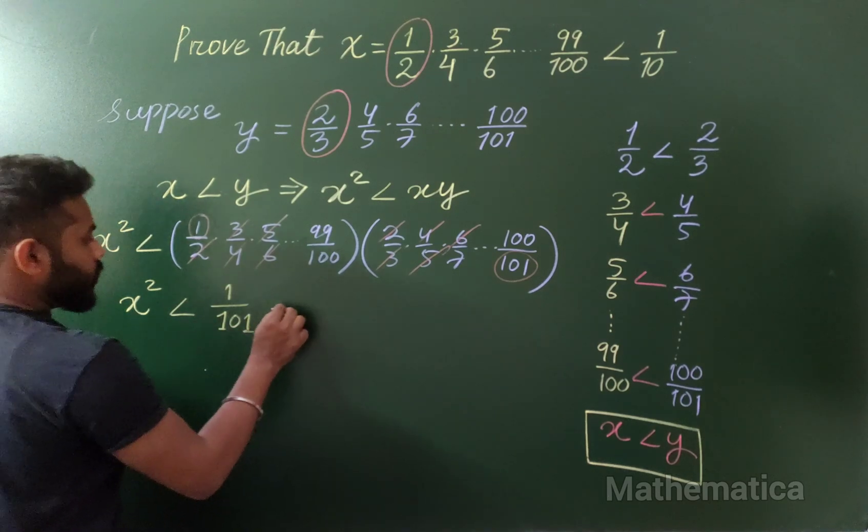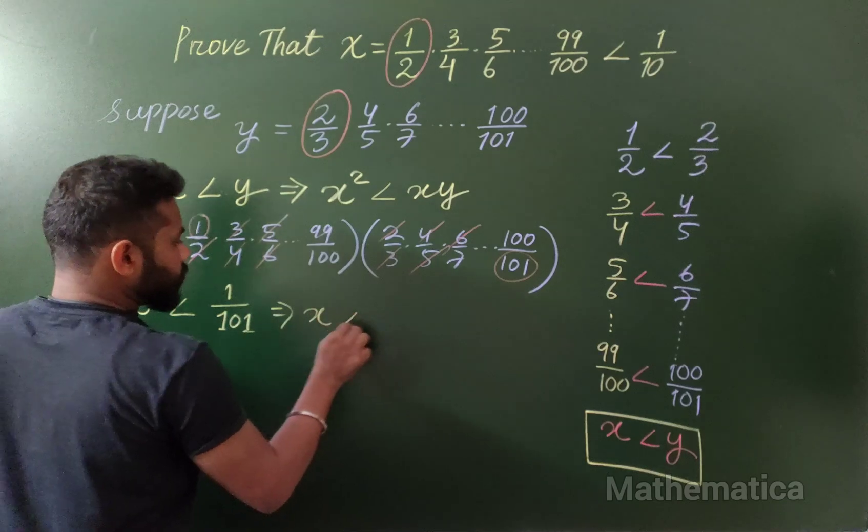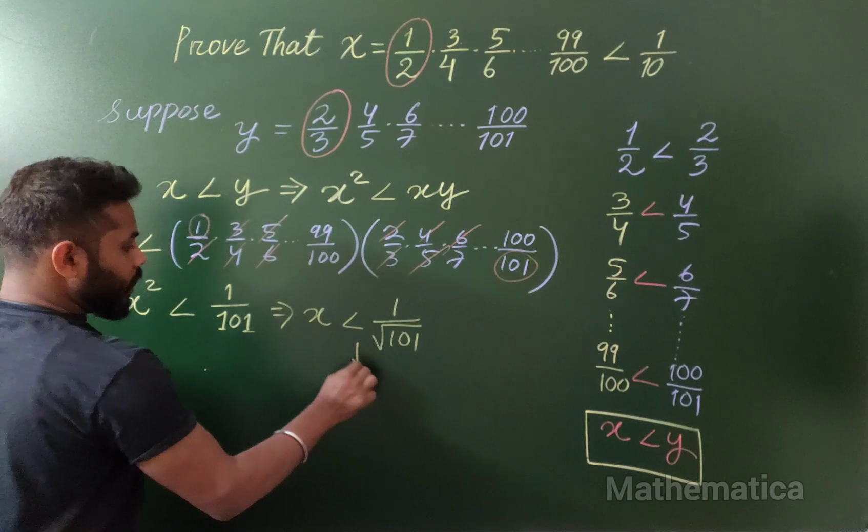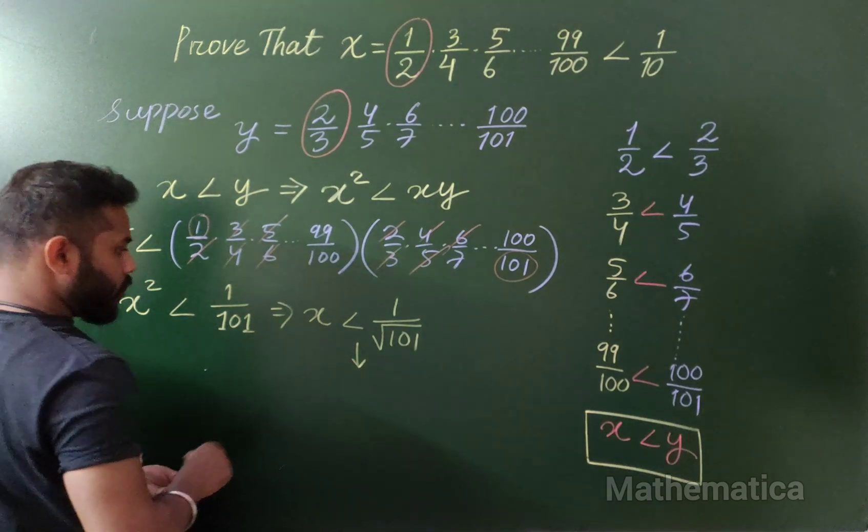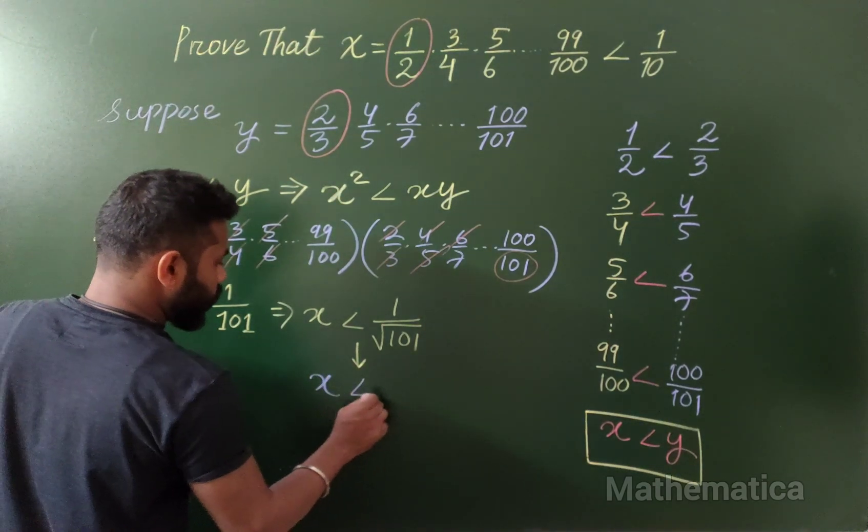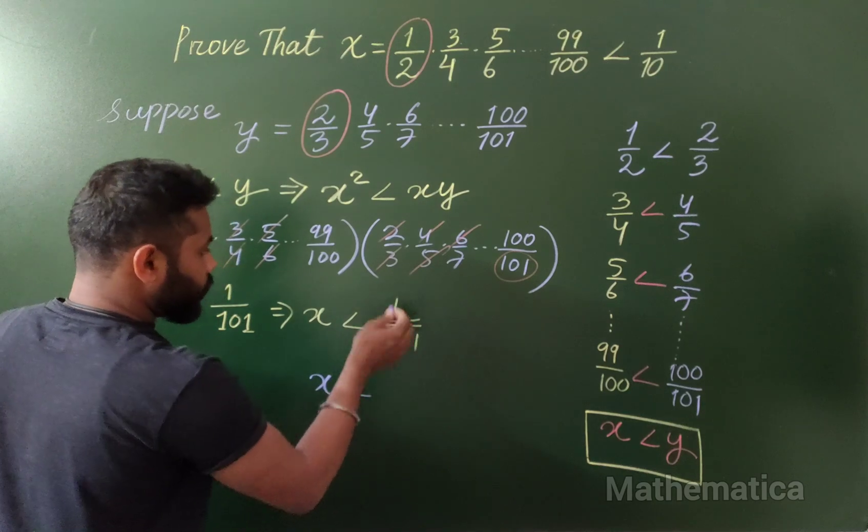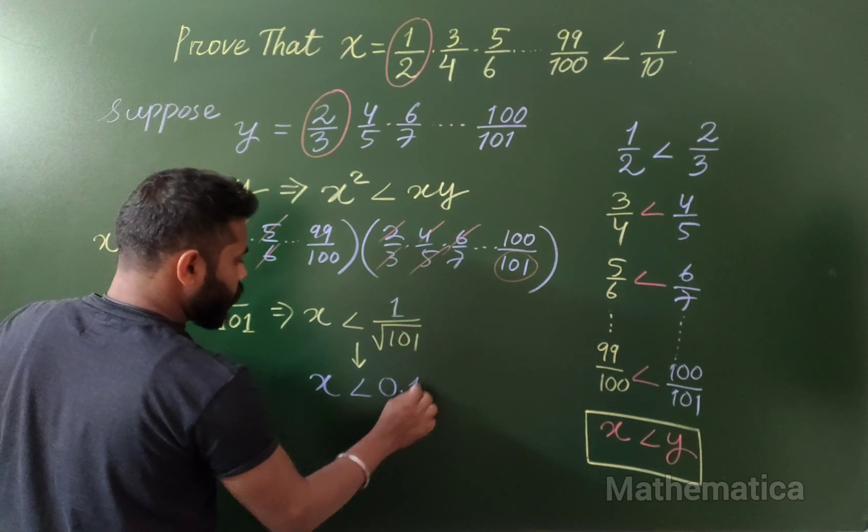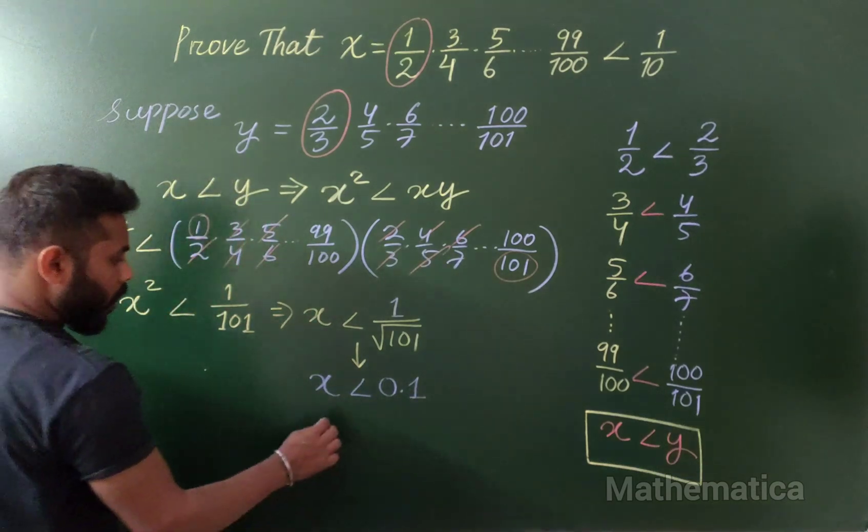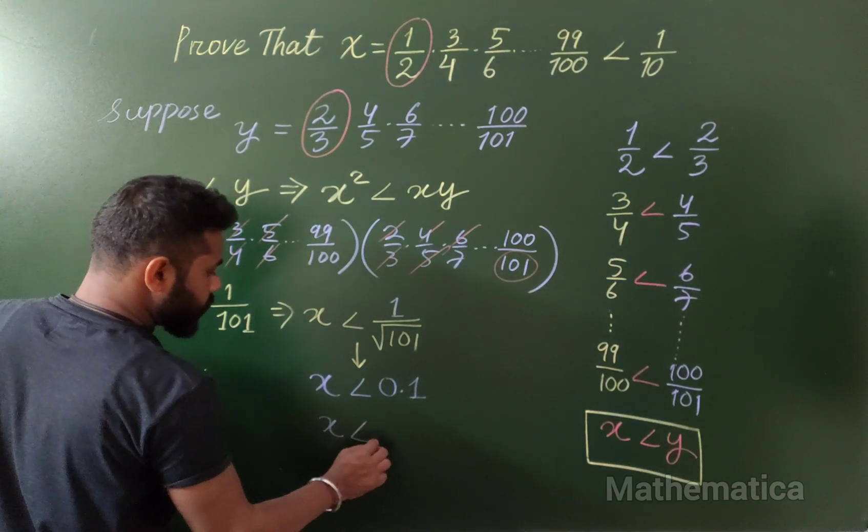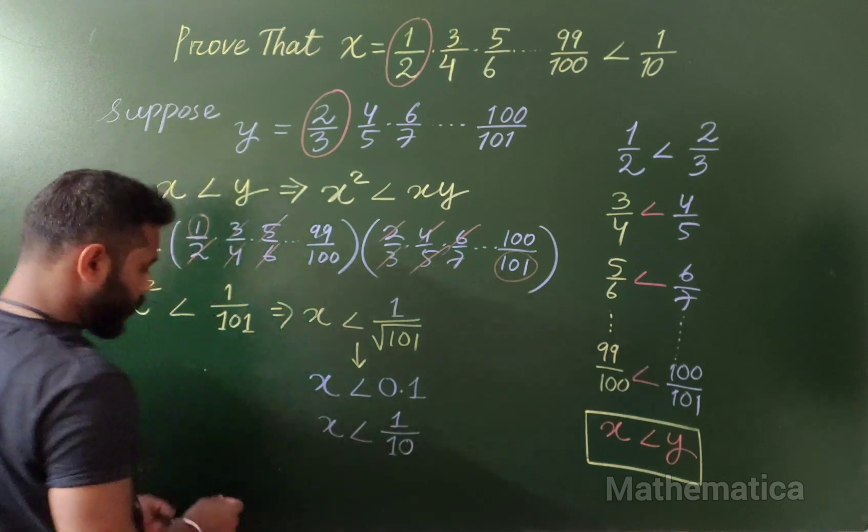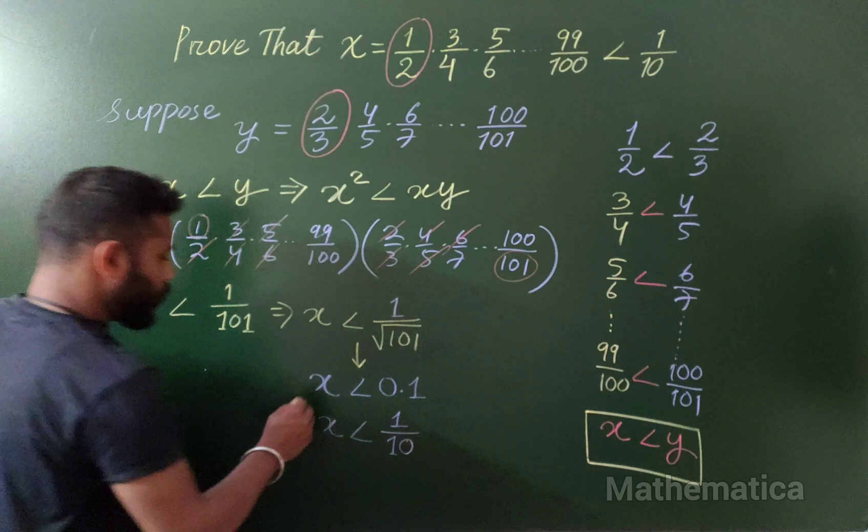It means x is less than 1 over square root of 101. And clearly, if you find out its value, you'll get this is less than 0.1, or x is less than 1/10. So the inequality is now proved.